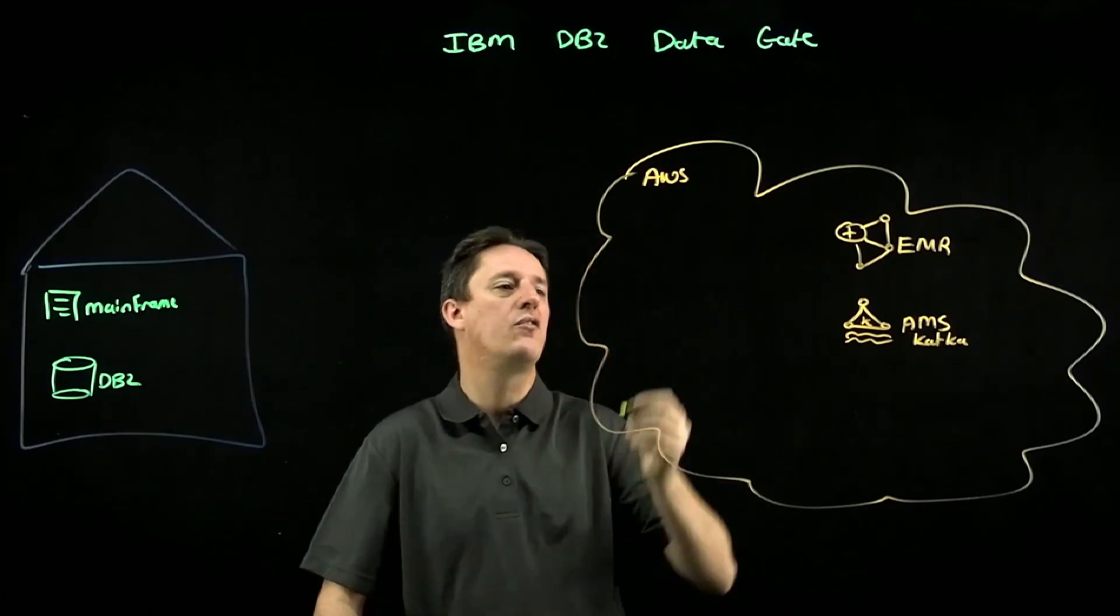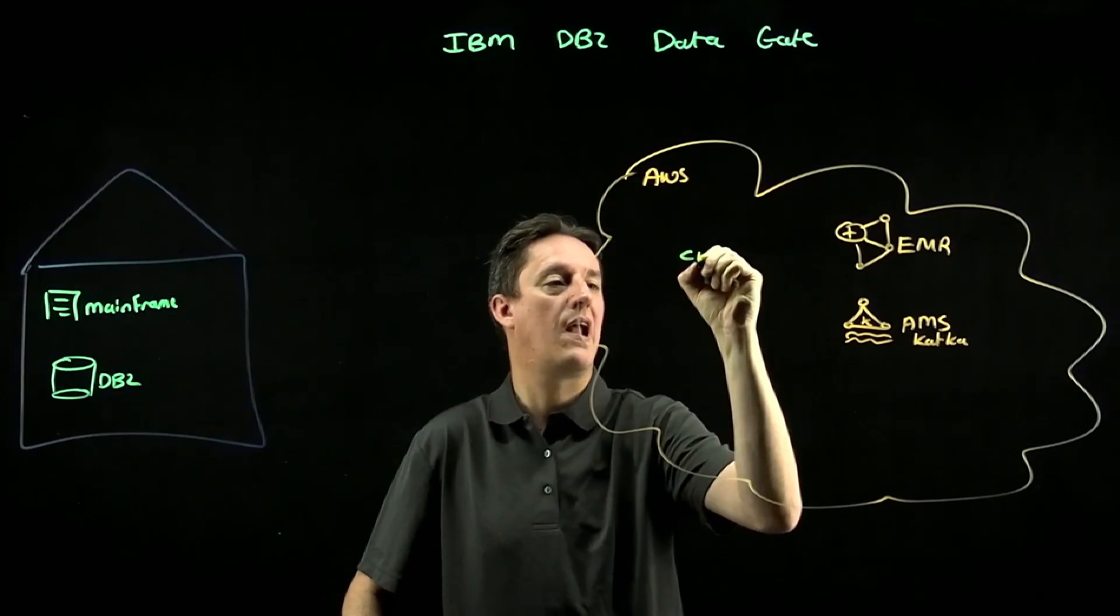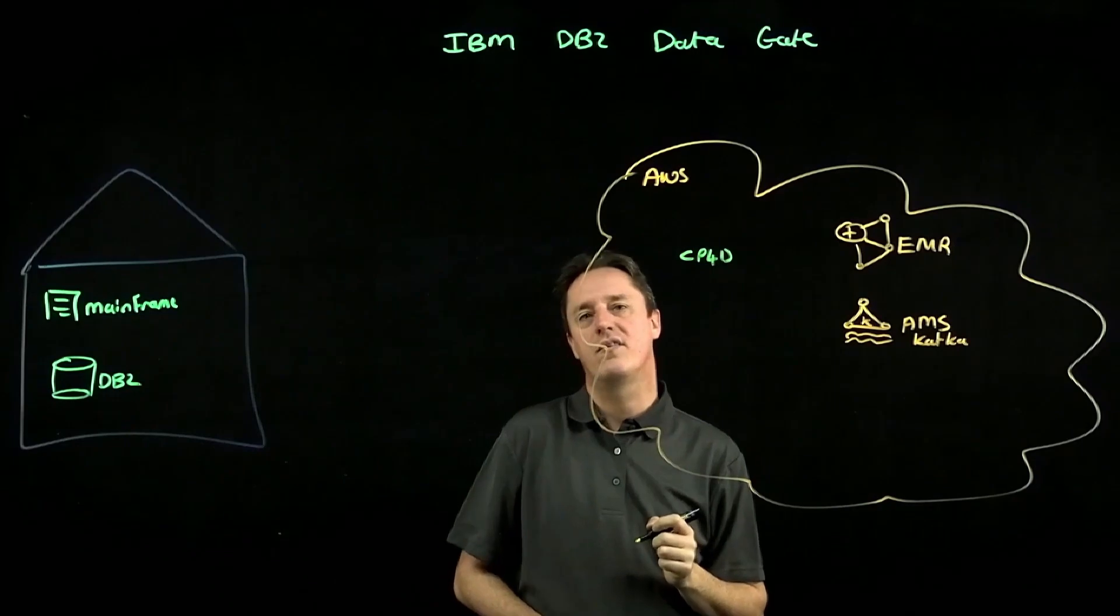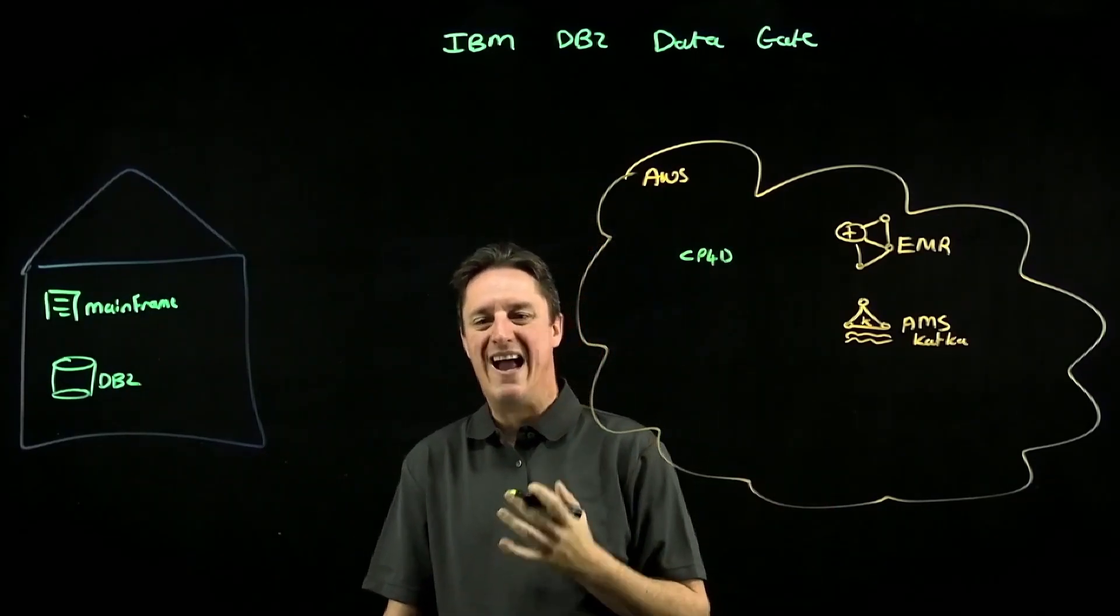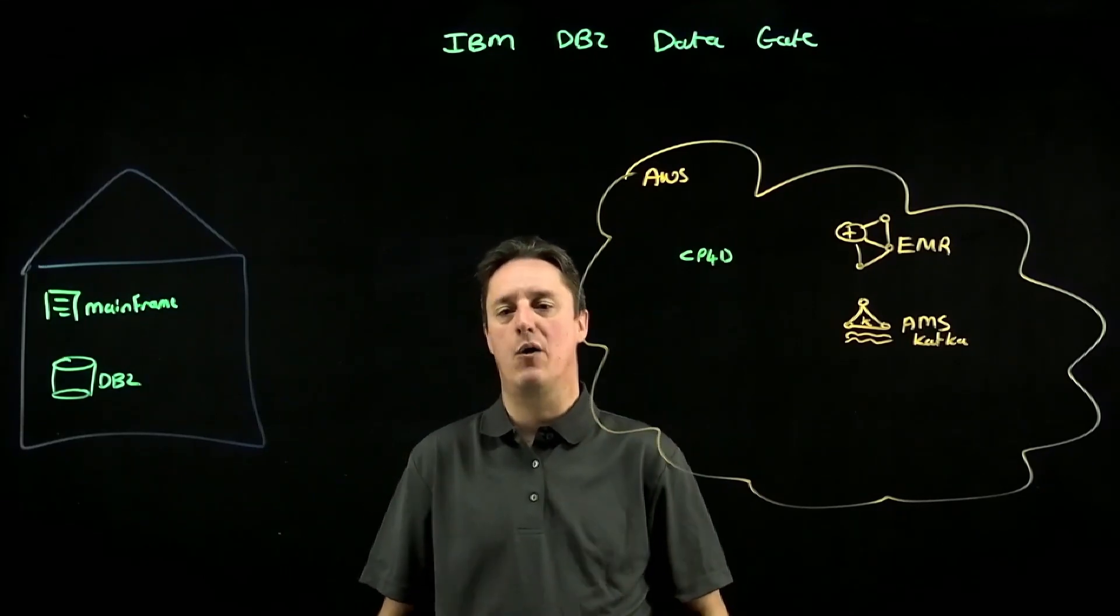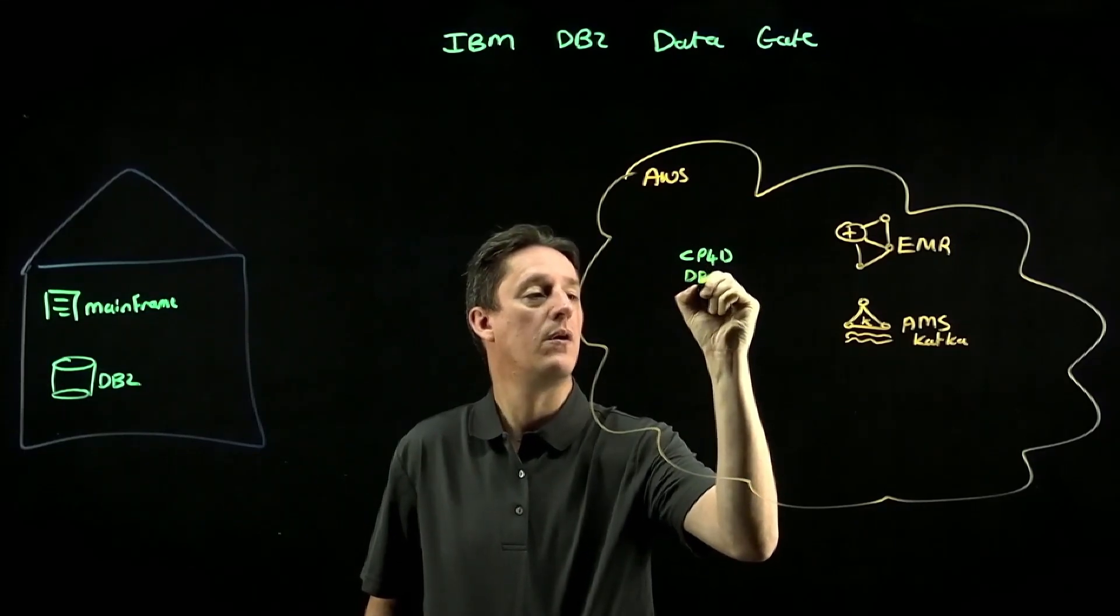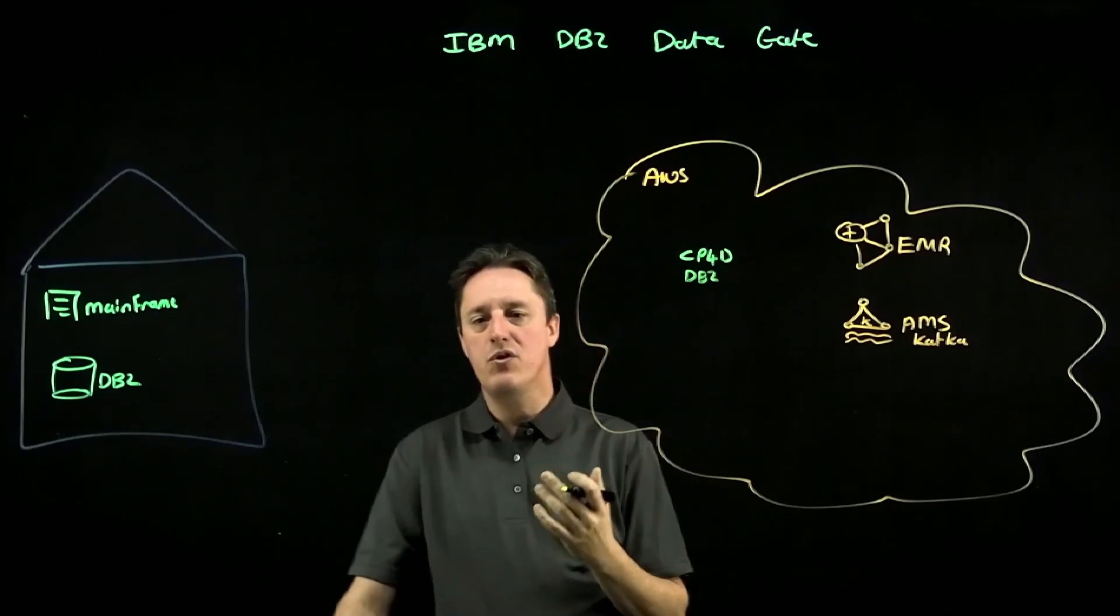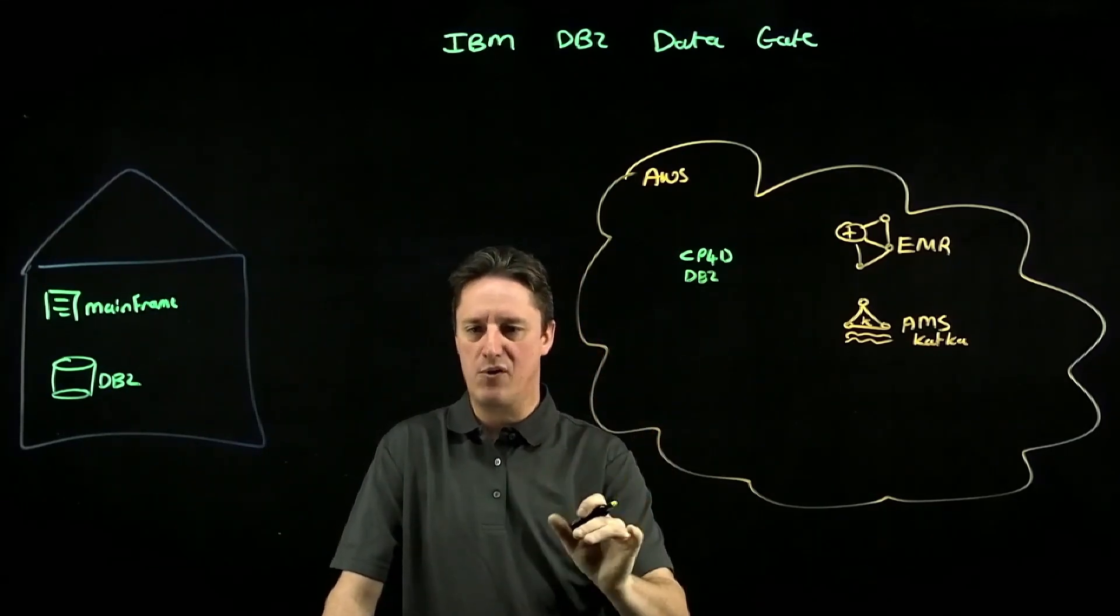What we're going to do is deploy IBM's Cloud Pak for Data on AWS. When you're deploying Cloud Pak for Data, one of the add-on services or additional components that can form part of that Cloud Pak is DB2. The installer for Cloud Pak for Data does give you the option to select DB2, DB2 Warehouse, all those components as add-on services.